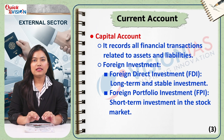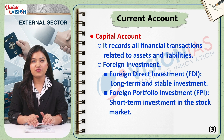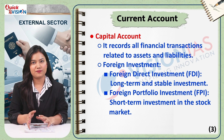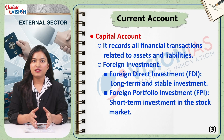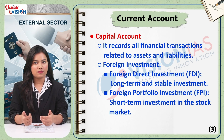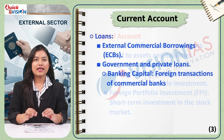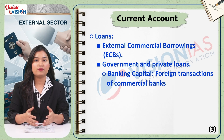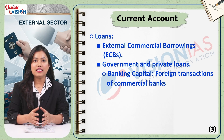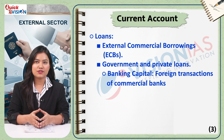The second part of the BOP is the capital account, which records all transactions that affect a country's assets or liabilities. It primarily consists of three main components. The first is foreign investment, which is of two types: foreign direct investment or FDI, which is long-term, and foreign portfolio investment or FPI, which is short-term. The second is loans, which includes external commercial borrowings or ECBs and government debt. And the third is banking capital, which includes changes in the foreign assets and liabilities of commercial banks.